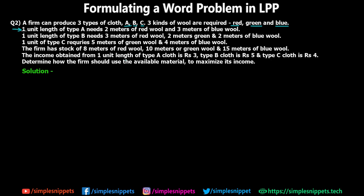One unit length of cloth A needs two meters of red wool and three meters of blue wool — it does not require green wool. One unit of cloth B needs three meters of red wool, two meters of green wool, and two meters of blue wool, so cloth B requires all three raw materials. One unit of cloth C requires five meters of green wool and four meters of blue wool, meaning it does not require red wool.